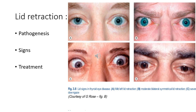Lid retraction is identified when the upper lid margin is level with or above the superior limbus, allowing sclera to be visible — called scleral show. The lower lid normally rests at the inferior limbus; retraction is suspected when sclera shows below the limbus. Mild lid retraction does not require treatment as it frequently improves spontaneously. Control of hyperthyroidism may be beneficial. Surgery to decrease the vertical dimension of the palpebral fissure may be considered for significant but stable lid retraction.